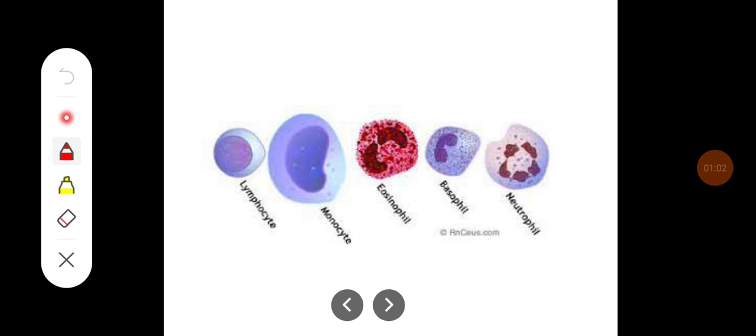These are the granulocytes and these are the agranulocytes. The granulocytes are the neutrophil, basophil and eosinophils, whereas agranulocytes are mainly the monocyte and mostly the lymphocytes.